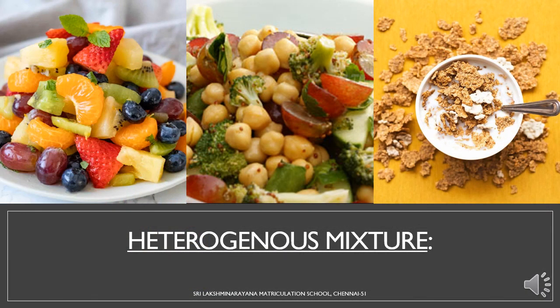Now, let us have a look at heterogeneous mixture. Here are some examples given for heterogeneous mixture. Let us consider the first image — it is a plate of fruit salad. In the plate of fruit salad, we can use fruits such as orange, strawberry, grapes, and kiwi. In the fruit salad, can we distinguish the fruits? Definitely yes. So, when you are able to distinguish the components of a mixture, then that kind of mixture is called a heterogeneous mixture.